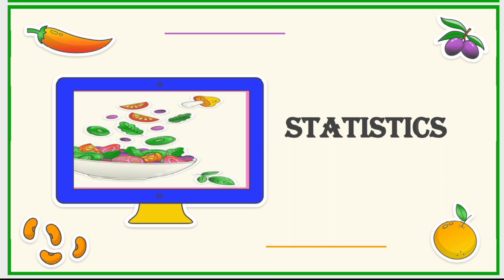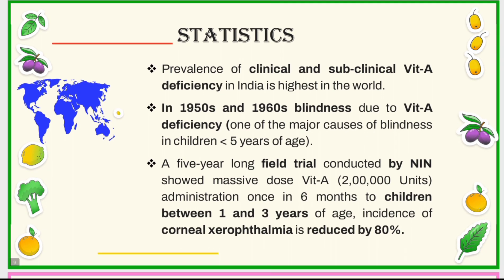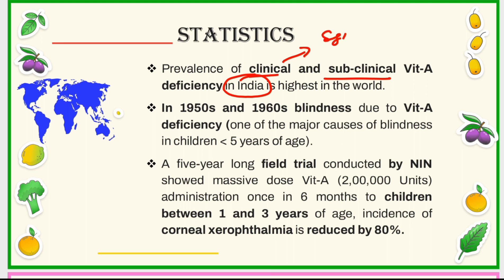Coming to the statistics related to vitamin A deficiency, the prevalence of both clinical and subclinical vitamin A deficiency is the highest in India in the world. Clinical deficiencies of vitamin A are those where children show signs and symptoms related to the deficiency. However, subclinical vitamin A deficiency is a condition where children do not show any signs or symptoms, and can only be diagnosed by lab investigations or imaging techniques.